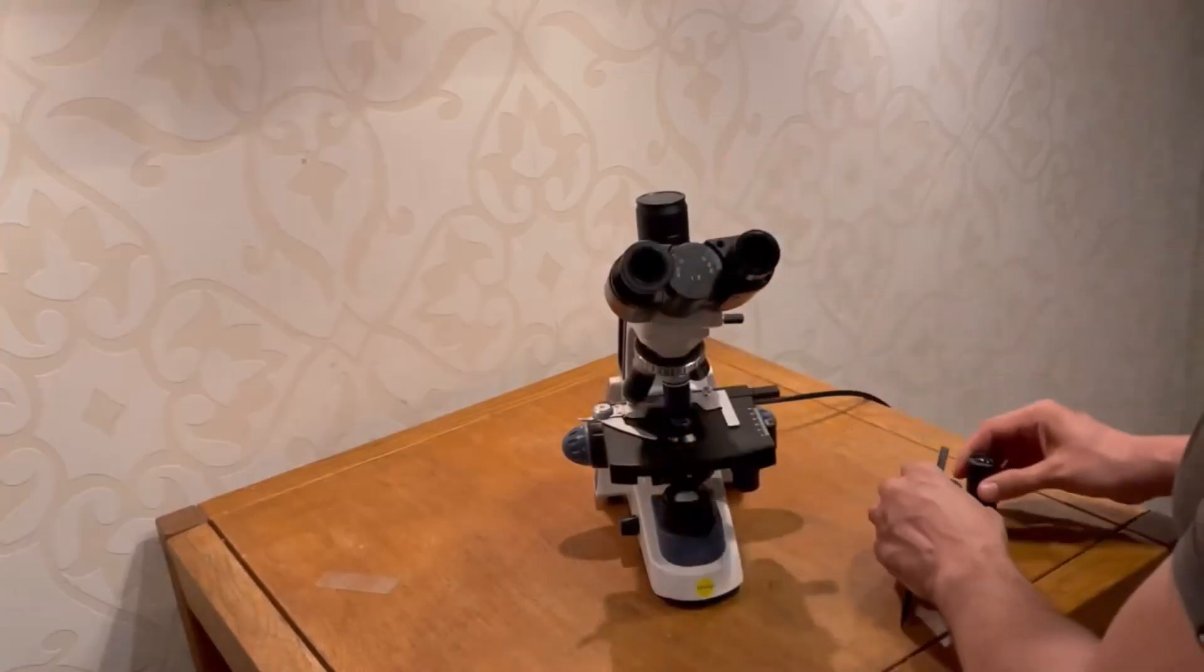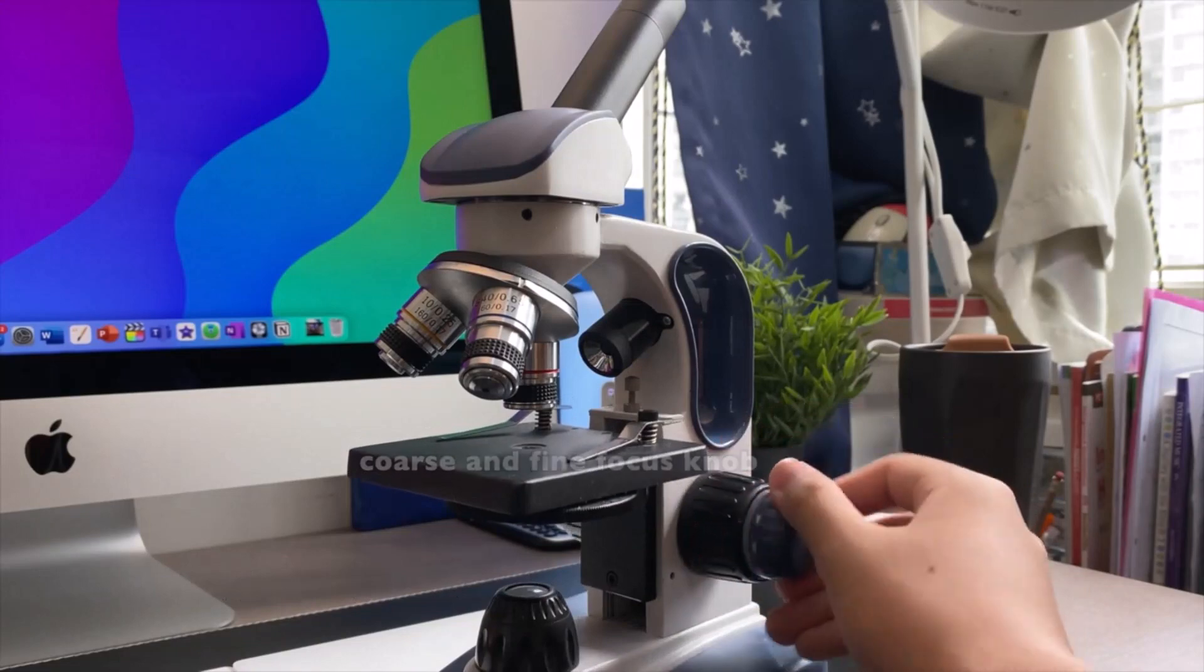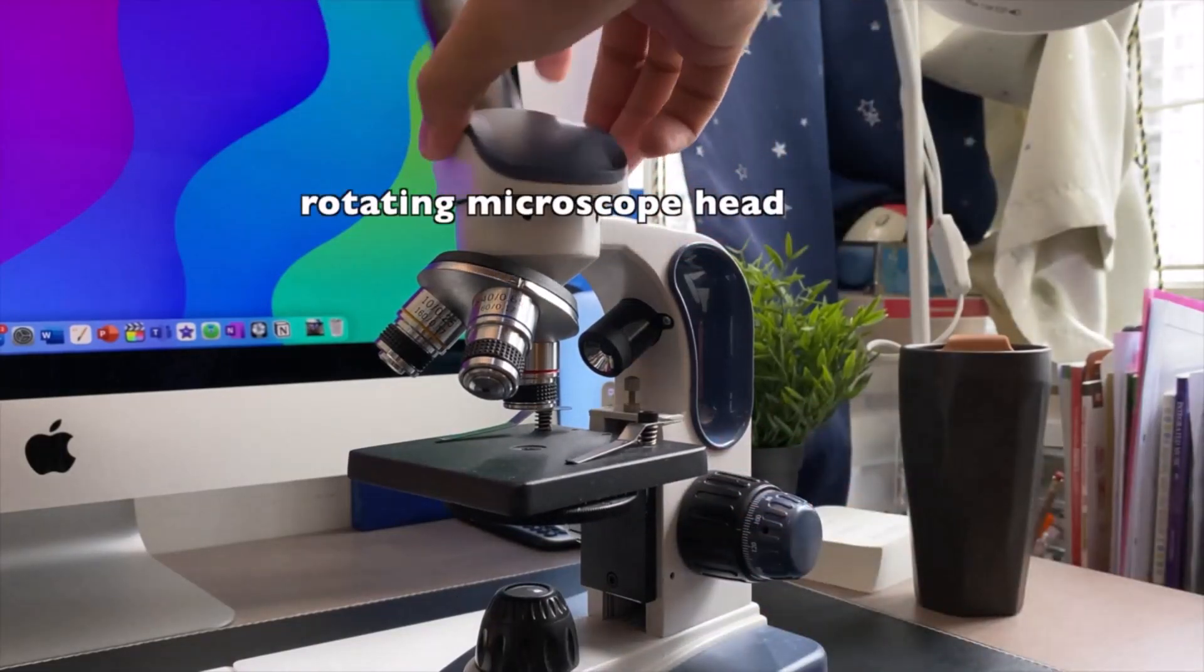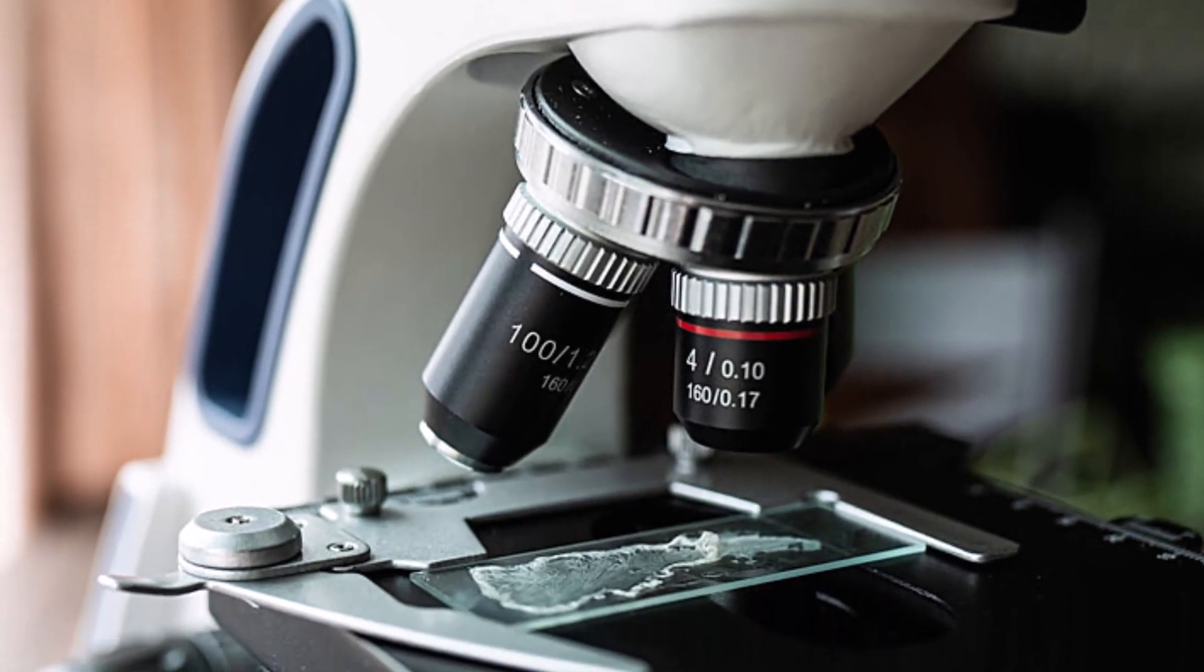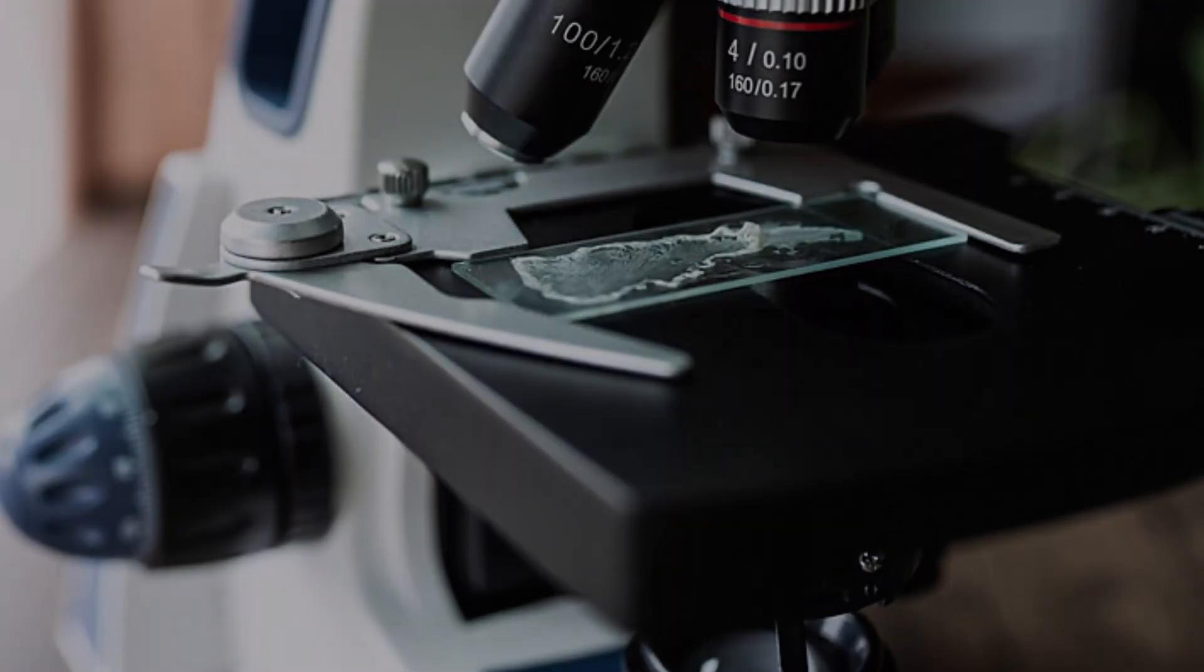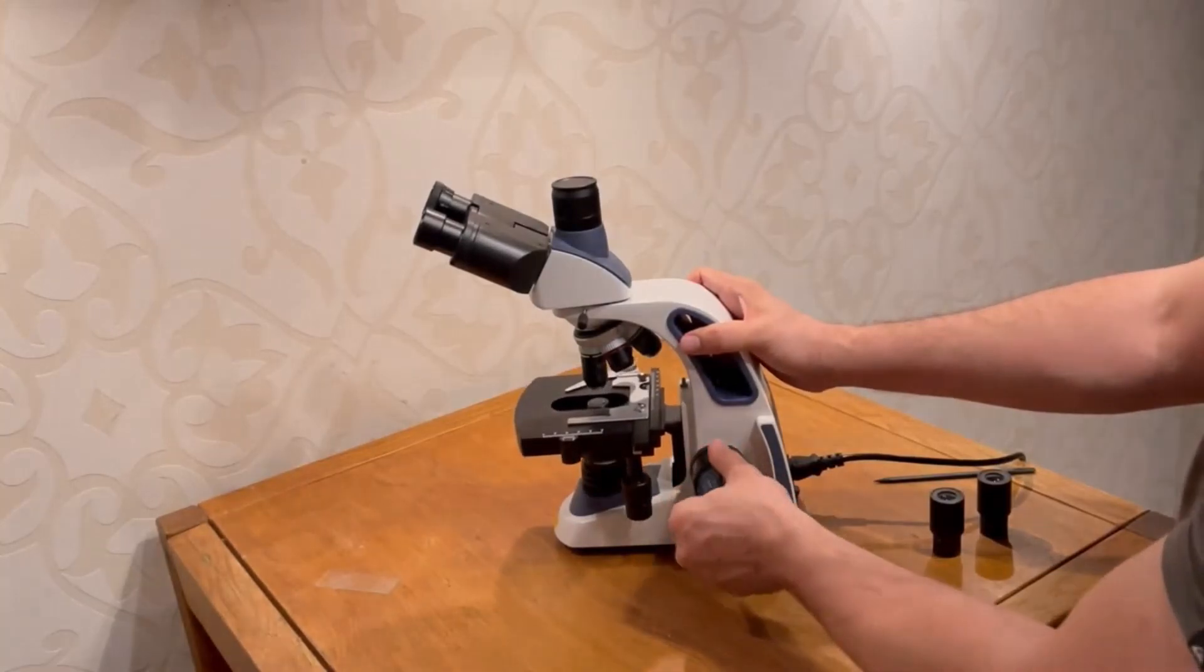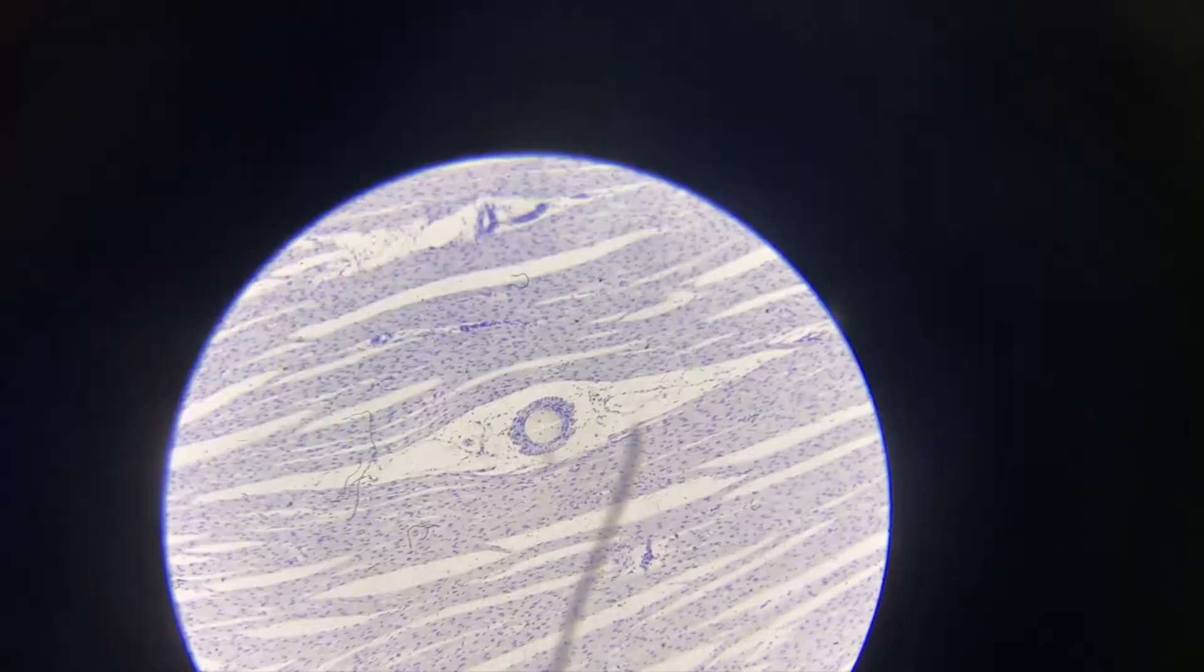It features two glass eyepieces, 10X and 25X, set at a 30-degree angle to reduce neck strain during specimen viewing. The precision focusing system and six levels of magnification (40X, 100X, 250X, 400X, 1000X, and 2500X) ensure detailed observations. An LED bulb with a dimmer wheel provides the necessary illumination, and the large mechanical stage is fully adjustable. Power is supplied via mains electricity.